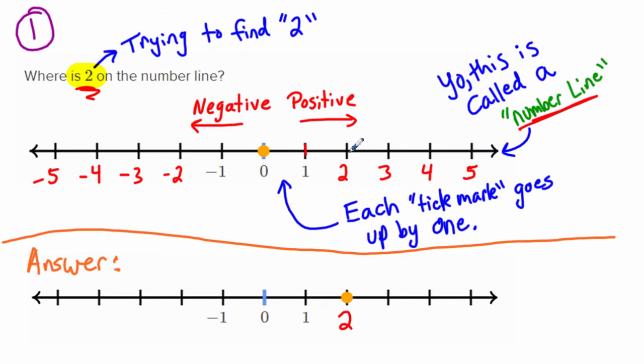So each tick mark, these are tick mark thingies right here, so each tick mark goes up by one on this particular one. So distance from zero to one, check it out, is plus one. All right, so you got that. And to go this way, it's minus one, right?